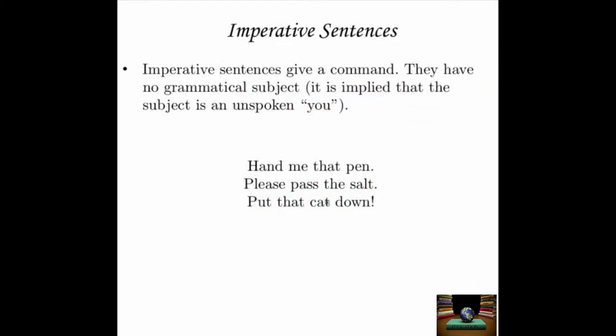Imperative sentences give a command or an instruction. They have no grammatical subject in the sentence; it is implied that the subject is an unspoken 'you.' For example, 'Hand me that pen.' — you is the subject, hand is the verb, and it ends with a period. 'Please pass the salt.' — you're being polite, speaking in a measured tone, ends with a period. Or imperative sentences can be louder and more forceful: 'Put that cat down!' ends with an exclamation point.